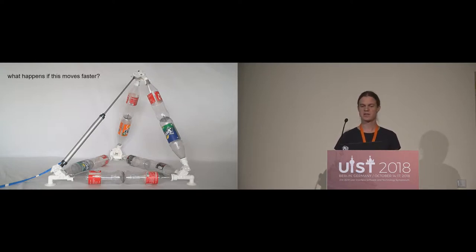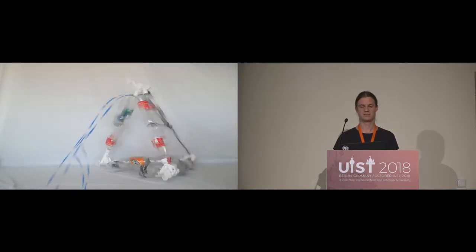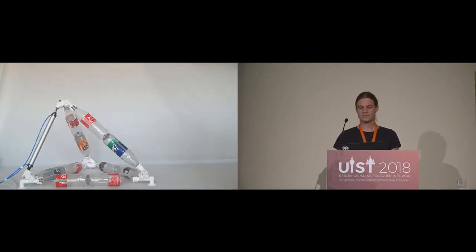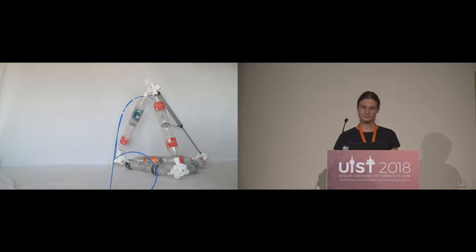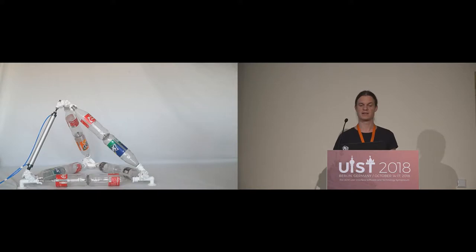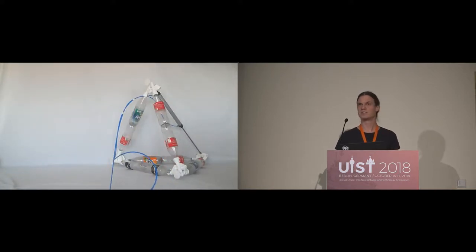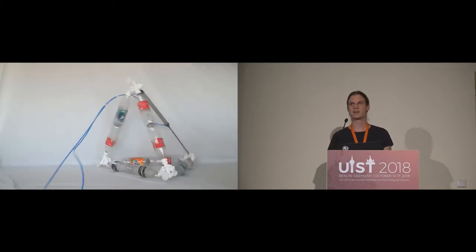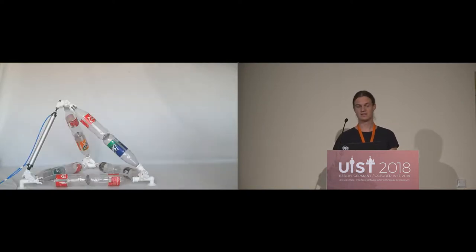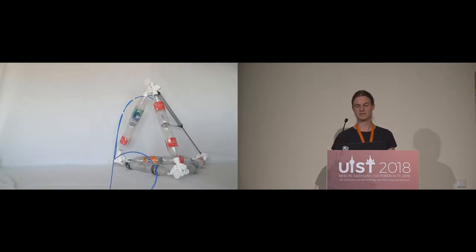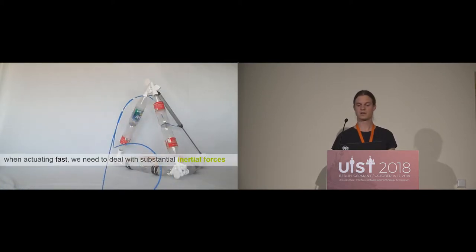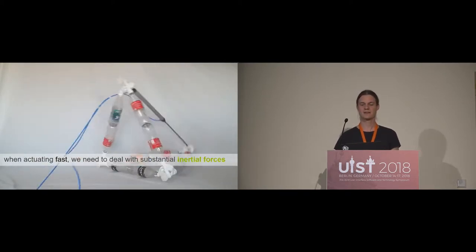But what happens if we would move this much faster? You see, this tips over. Here, our static analysis would massively fail. What happens is, when we are accelerating this object, it builds up inertial force, and that's why it tips over. What we need here is a dynamic analysis. We need to deal with this, we need to design these objects for inertial forces.